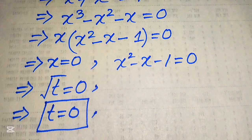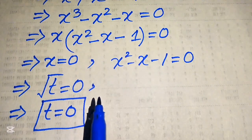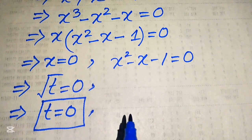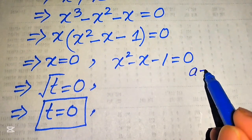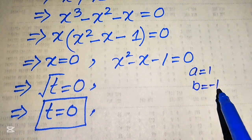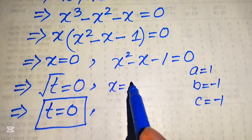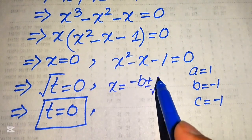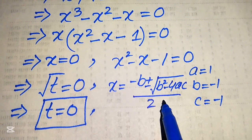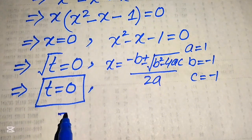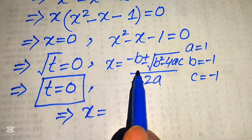Now to find the other values, we solve x squared minus x minus 1 equals zero. To find the values of x, we identify the coefficients: a equals 1, b equals minus 1, and c equals minus 1. We apply the quadratic formula: x equals negative b plus or minus the square root of b squared minus 4ac, all divided by 2a.